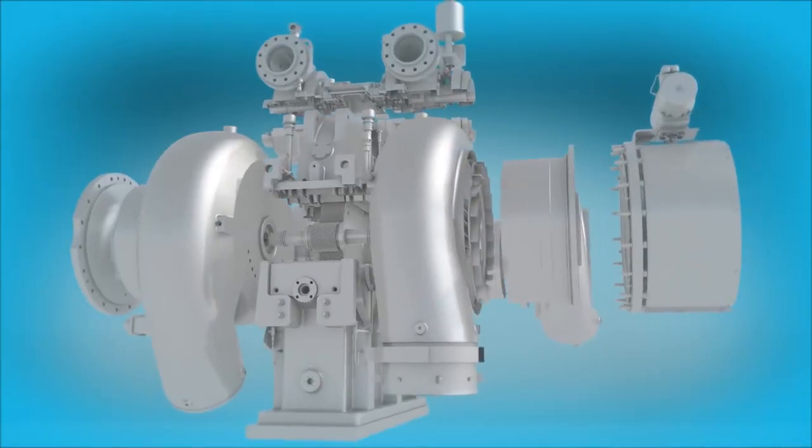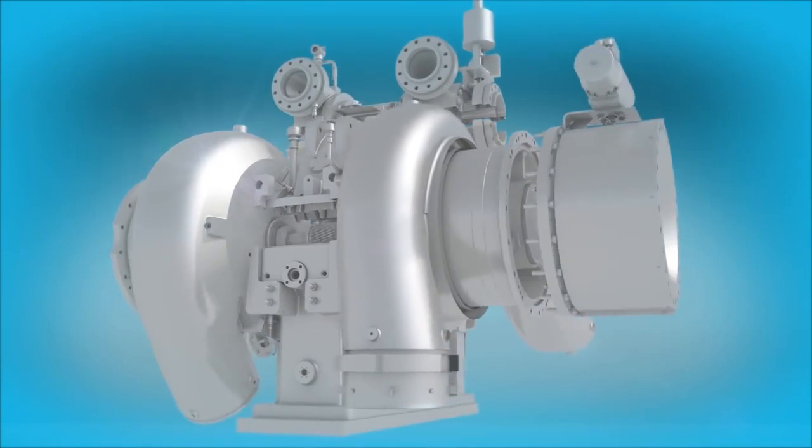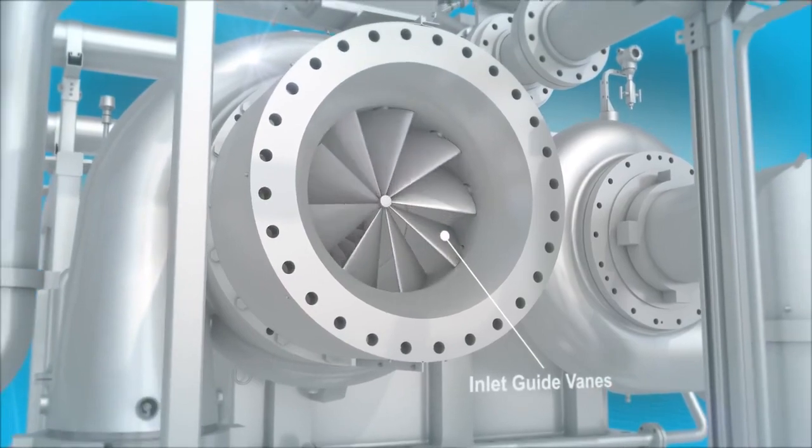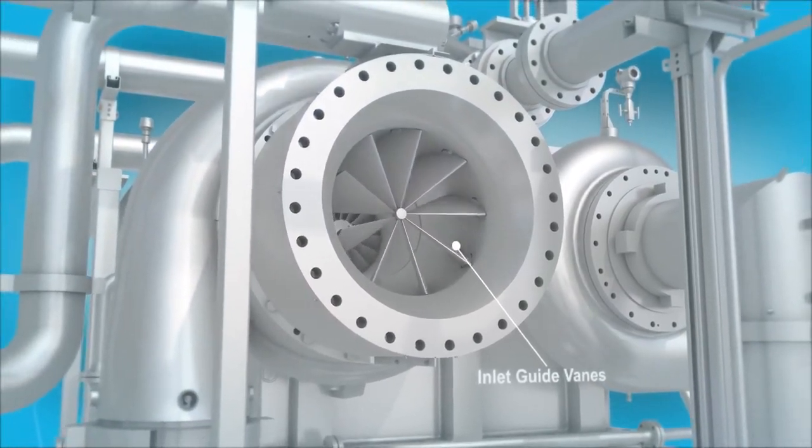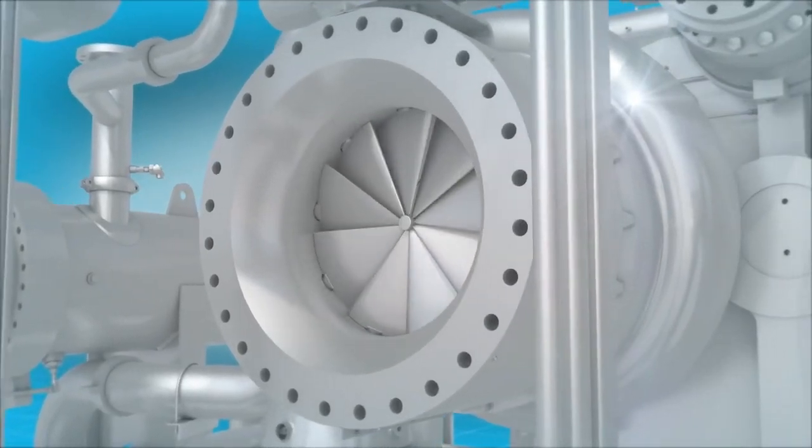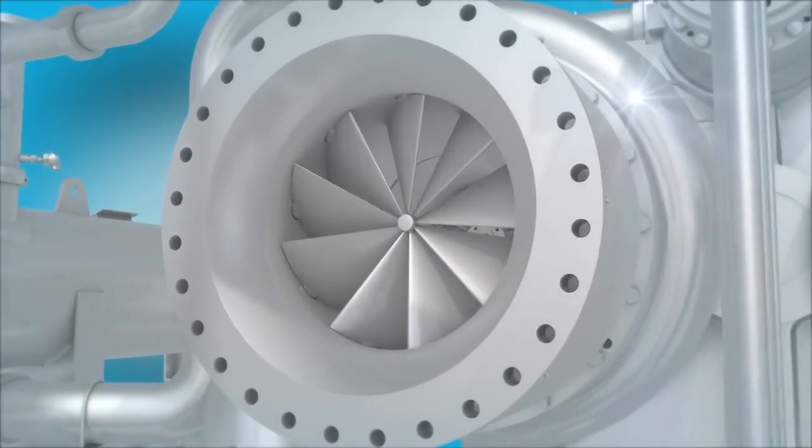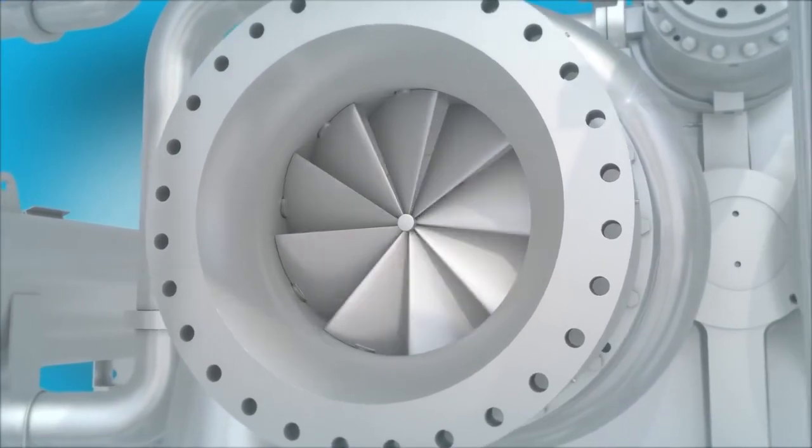The compression process begins with gas entering through adjustable inlet guide vanes, or IGVs, which are standard on all Atlas Copco compressors. IGVs control how much flow is sent into the machine, providing accurate process control.